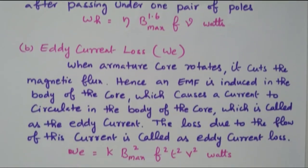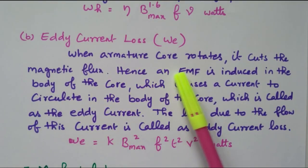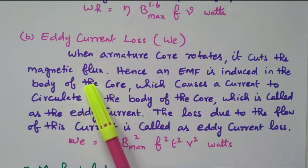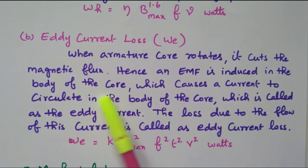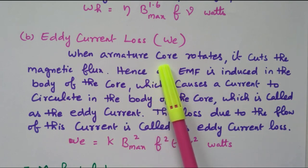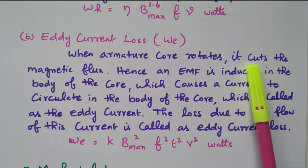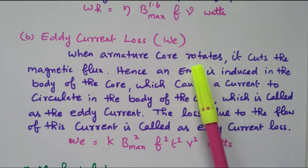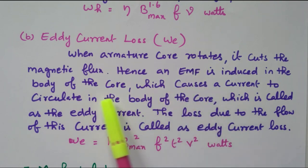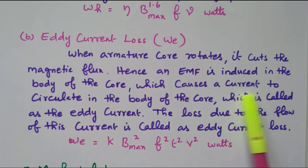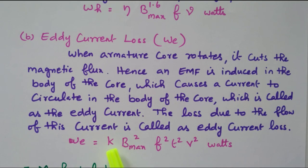Then we will see the eddy current loss. When the armature core rotates, it cuts the magnetic flux. Hence EMF is induced in the body of the core. The armature, while rotating, cuts the flux. The core also cuts the magnetic flux. So due to that, EMF is generated, which causes a current to circulate in the body of the core. That current is called eddy current. Due to that eddy current, some losses will happen. These two losses — hysteresis and eddy current — are due to the iron core.